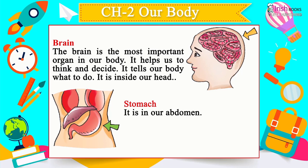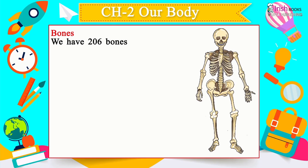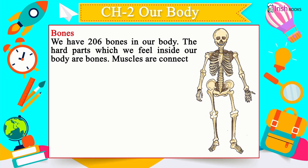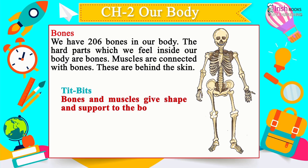The stomach is in our abdomen and digests the food we eat, giving us energy. We have 206 bones in our body — the hard parts felt inside are bones. Muscles are connected with bones and are behind the skin. Bones and muscles give shape and support to the body.